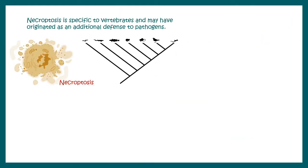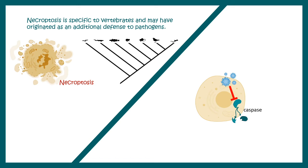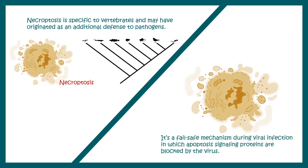Necroptosis is evolutionarily conserved in vertebrates and serves as an additional defense against pathogens. Many viruses can infect cells and block caspases by encoding specific enzymes that break or inhibit them. If caspases are blocked, these cells would not be killed by the immune system, giving viruses a chance to survive. In this scenario, necroptosis ensures cell death still happens, acting as a fail-safe mechanism to protect cells from such viruses.